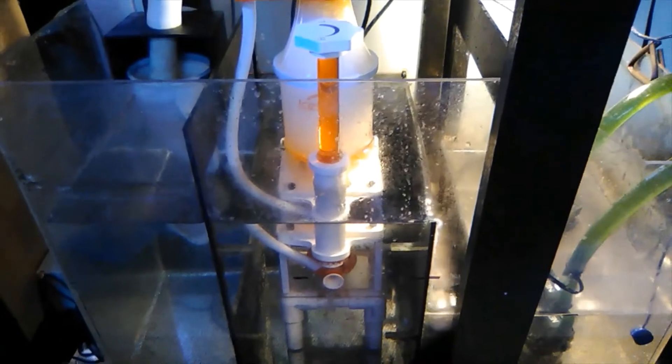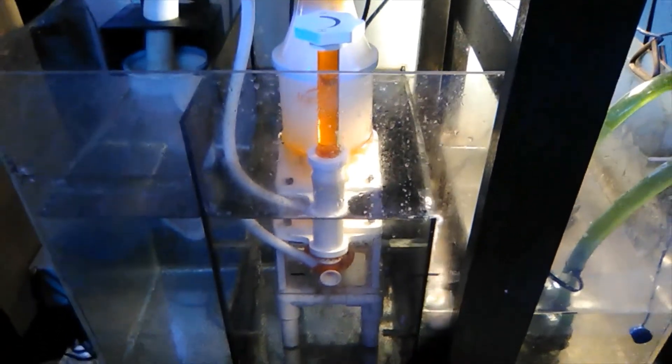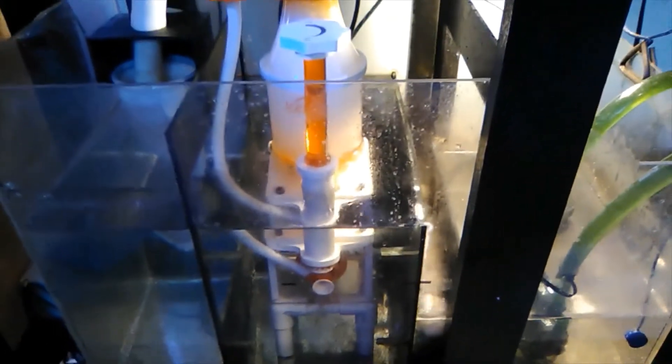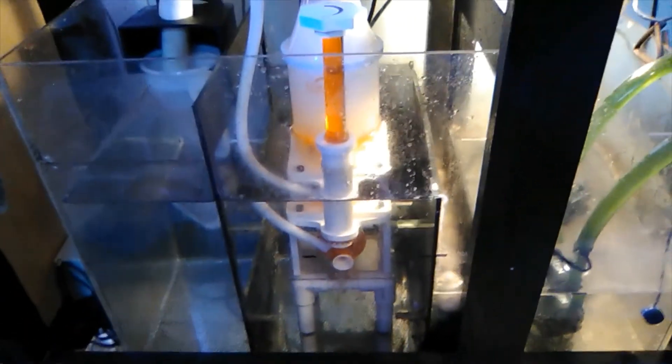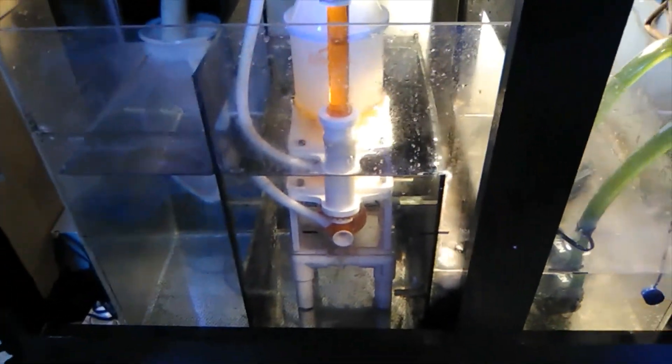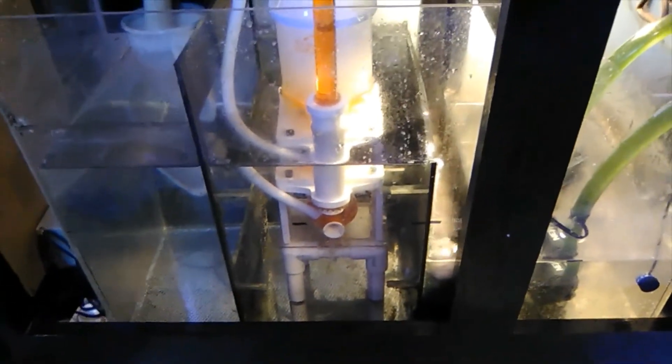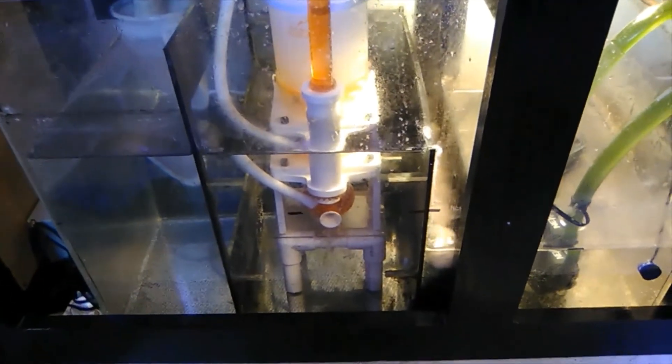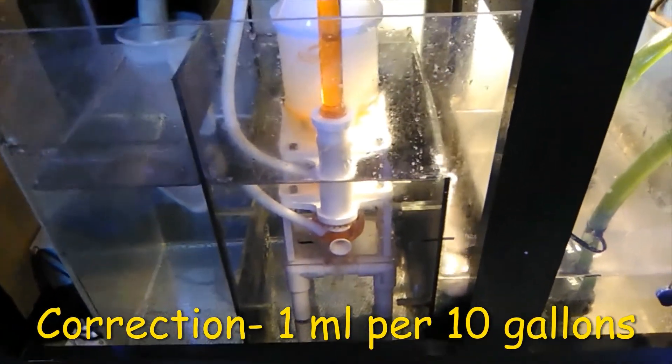The nitrates are up to 10 and the phosphates are up to 0.25. So my conclusion is what I was doing with NOPOX and using this as an algae scrubber was really working. Now, what I'm going to do is double my NOPOX dose. I've been dosing one milliliter per gallon, so I've been putting in approximately 5 milliliters per day.